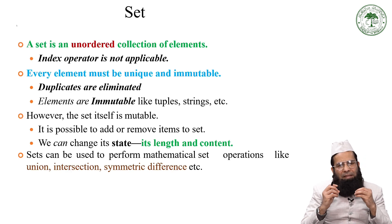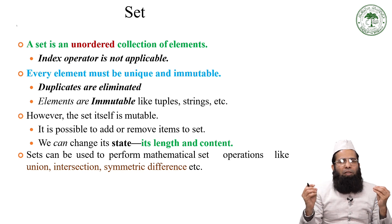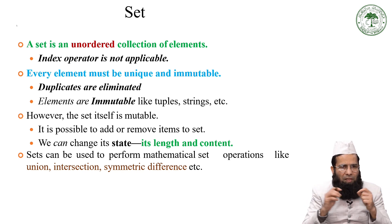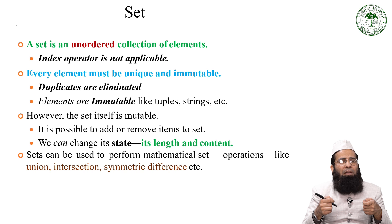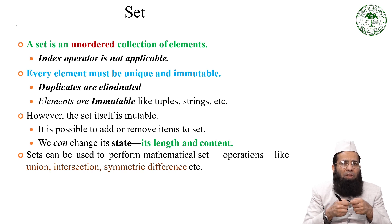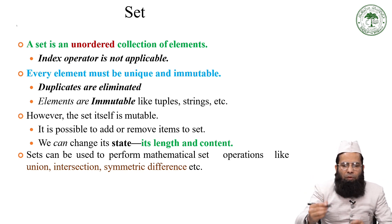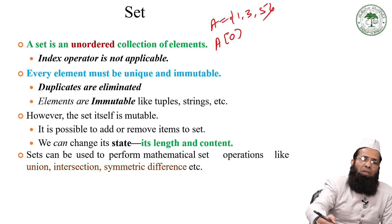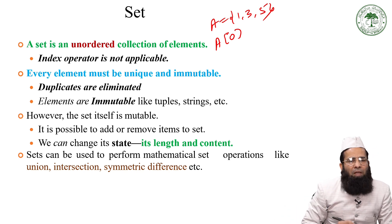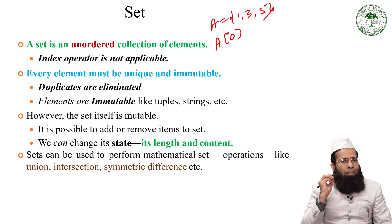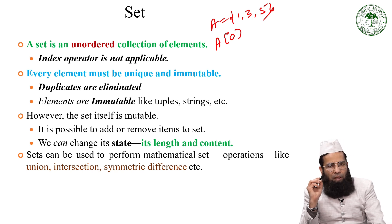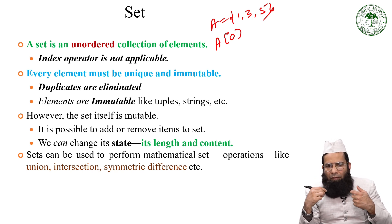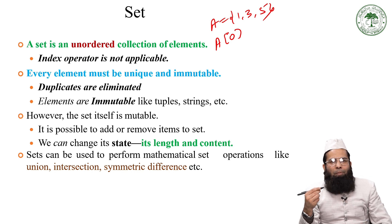What is a set actually? A set is an unordered collection of elements — it does not possess any order. You cannot access an individual element of a set using the index operator. For example, if you have a set {1, 2, 1, 3, 5}, you cannot access data using an index operator because it has no order. Every element must be unique and immutable.